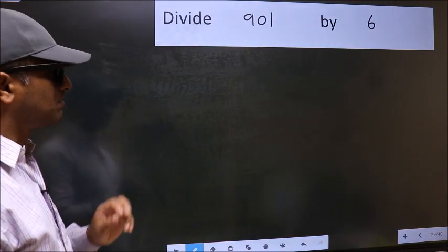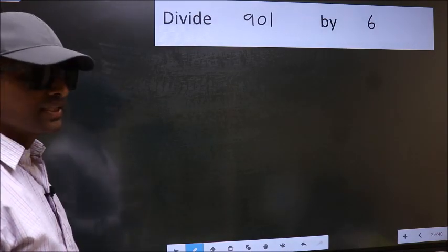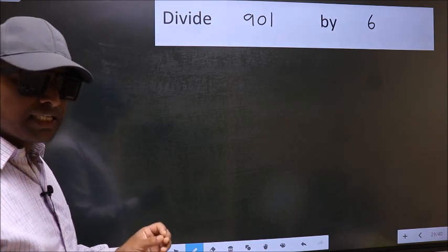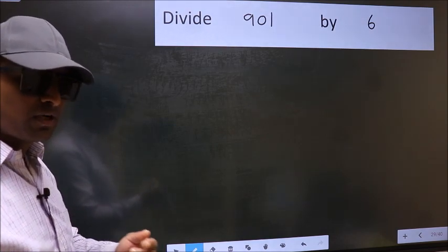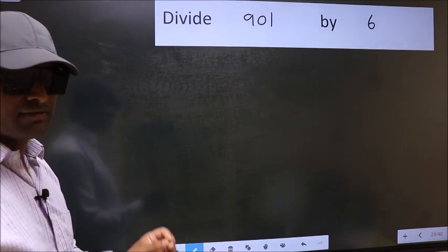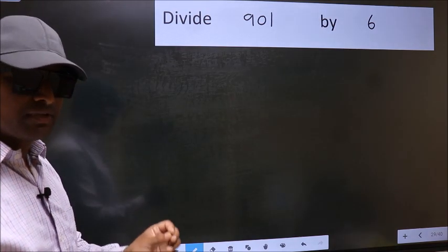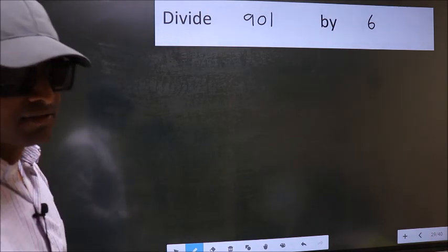Divide 901 by 6. While doing this division, many do this mistake. What is the mistake that they do? I will let you know. But before that, we should frame it in this way.